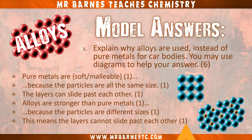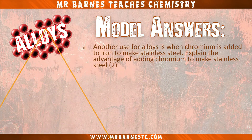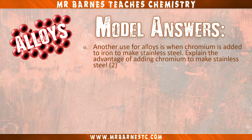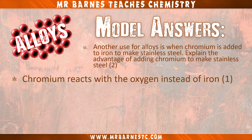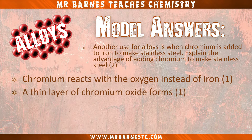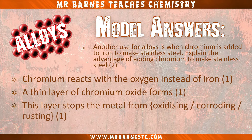Onto part three: explain why we add chromium to make stainless steel. First, chromium reacts with oxygen instead of iron — that's your first mark. This then forms a layer of chromium oxide for your second mark. Finally, this layer stops the metal from oxidizing. Any two of those three points would get you full marks.